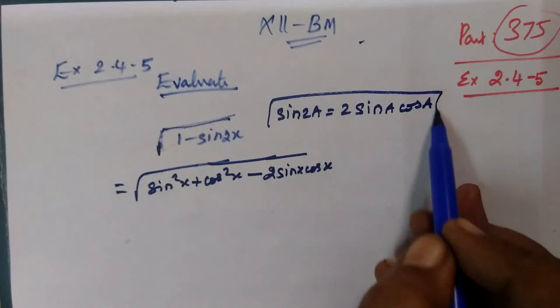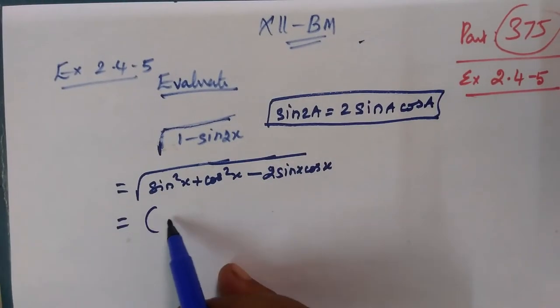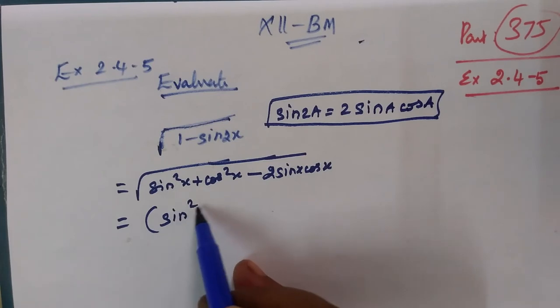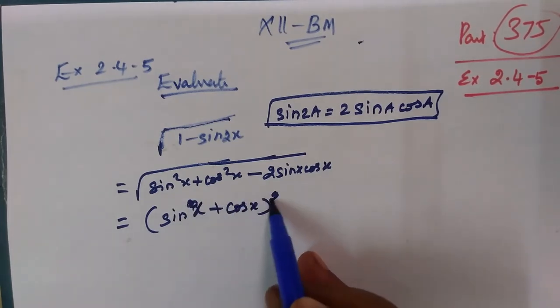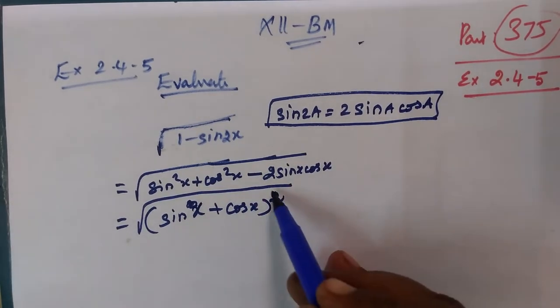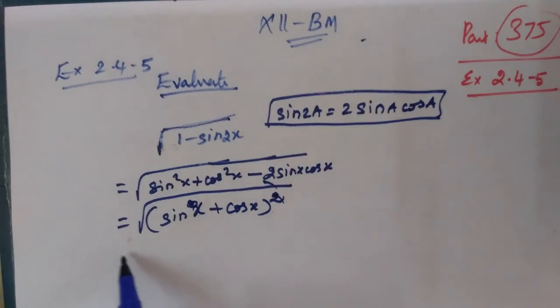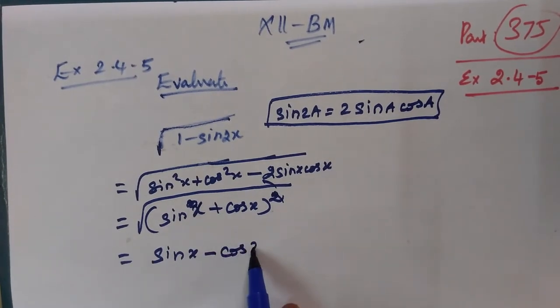Using this formula, this is nothing but a minus b whole squared. So sin x minus cos x the whole squared. The root and the squared cancel. So we get sin x minus cos x.